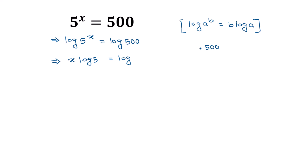To simplify log of 500, we find the prime factors of 500. Dividing by 2 gives 250; dividing by 2 again gives 125. Then dividing 125 by 5 gives 25, and dividing 25 by 5 gives 5. So 500 is fully factored.